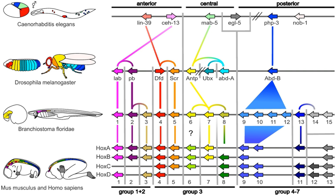Among the most important toolkit genes are the Hox genes. These transcription factors contain the homeobox protein-binding DNA motif, also found in other toolkit genes, and create the basic pattern of the body along its front-to-back axis. Hox genes determine where repeating parts, such as the many vertebrae of snakes, will grow in a developing embryo or larva. Pax-6 is a classic toolkit gene. Homeobox genes are also found in plants, implying they are common to all eukaryotes.